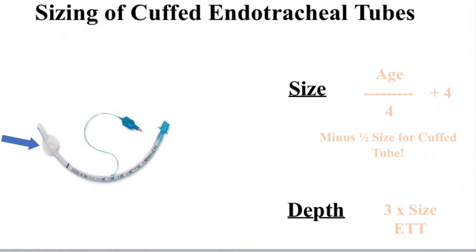For the depth, a simple way to remember the general depth of endotracheal tube insertion is three times the size of the endotracheal tube. In our example, if using an uncuffed tube, that would be 18 centimeters. For a cuffed tube, that would be anywhere from 16 to 17 centimeters depth.